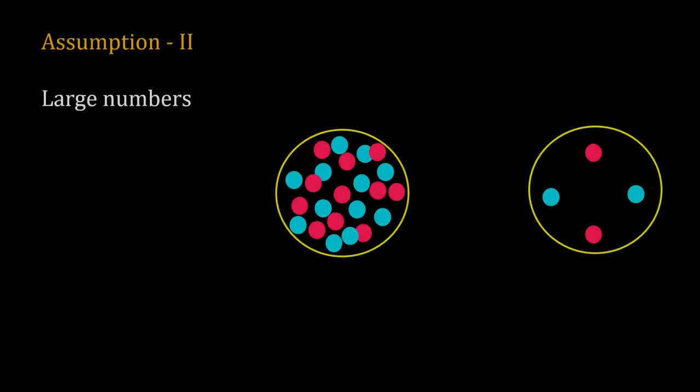The second assumption is that the system size is large. If we are dealing with molecules, then we must have a large number of molecules. Take the example of red and blue molecules again. Suppose these molecules are reactants of a reaction. When a red molecule hits the blue one, we have a product. On the left-hand side cell, we have lots of these molecules, so if we observe this cell, almost every other moment there will be a reaction. So we will get a smooth increase in the product.